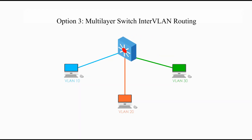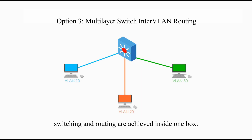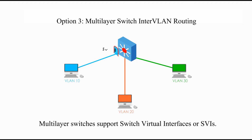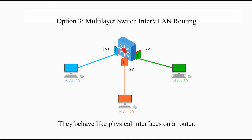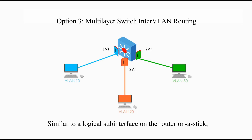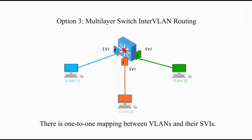Option 3: Multi-layer switch inter-VLAN routing. With the router-on-a-stick approach, we need a router and a switch. But with a multi-layer switch — sometimes called a layer-3 switch — switching and routing are achieved inside one box. Multi-layer switches support switch virtual interfaces, or SVIs. SVIs are logical interfaces that can act as gateways and perform routing. They behave like physical interfaces on a router. They have IP addresses associated with their own VLANs, and they are completely virtual. Similar to a logical sub-interface on a router-on-a-stick, one SVI can be created for each VLAN. There is a one-to-one mapping between VLANs and their SVIs.